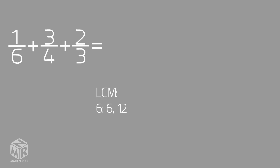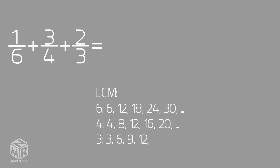To find the least common multiple, we write out the multiples of 6, 4, and 3. The least common multiple is the least number that they all share.